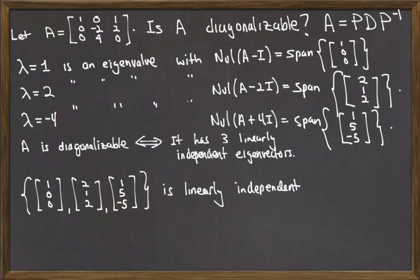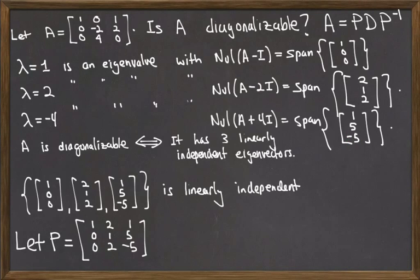To find P, take your eigenvectors and use them as the columns of the matrix P. So I'm going to let P be the matrix with [1, 0, 0] in the first column, then the second eigenvector and the third one in the remaining columns. This matrix P is necessarily invertible. Its columns are linearly independent, and that's one of the conditions for being an invertible matrix.